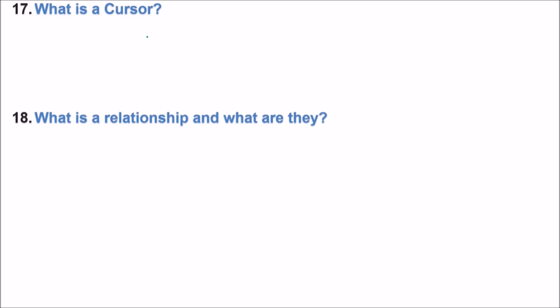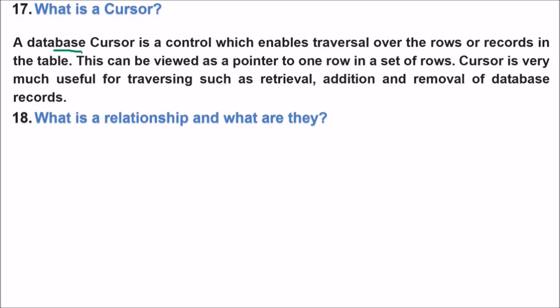What is a cursor? A database cursor is a control which enables traversal over the rows or records in a table. If you want to traverse through different rows — similar to how you traverse a tree or do a sequential search — the cursor acts like a loop variable, such as 'i' in a for loop. A cursor can be used as a pointer to one row in a set of rows, and is useful for retrieval, addition, and removal of data records.